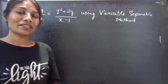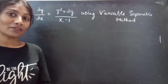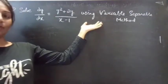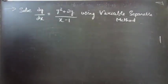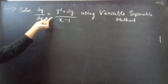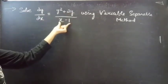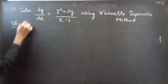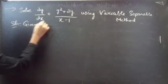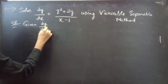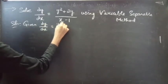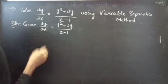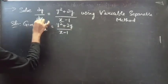Hello everyone, this is Kalpana here. In this video we are going to solve a differential equation using the variable separable method. The problem is: solve dy/dx = (y² + 2y) / (x - 1). Given equation: dy/dx = (y² + 2y) / (x - 1).